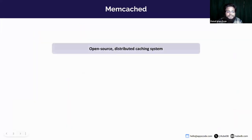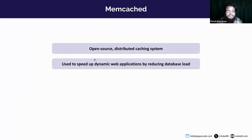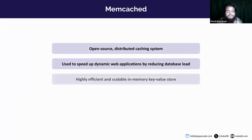Memcached is an open-source distributed caching system. It allows multiple servers to work together to store in-memory data. It is used to speed up dynamic web applications by reducing database load. By caching recently accessed data in-memory, Memcached reduces the need for repeated database queries, significantly speeding up web applications and reducing database workload. It is a highly efficient and scalable in-memory key-value store.